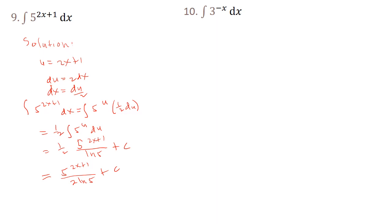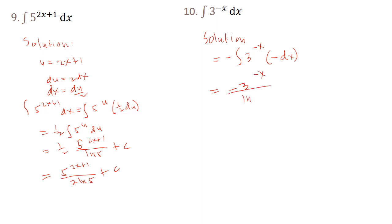Number 10: integral of 3^(-x) dx. This can be written as negative integral of 3^(-x) · (-1) dx, which equals -3^(-x) over ln(3) plus C.